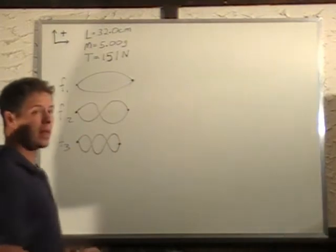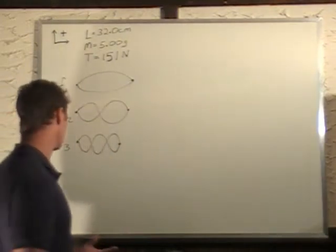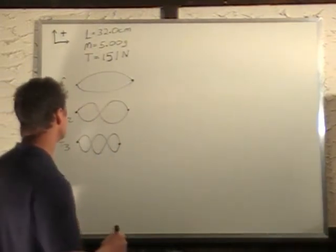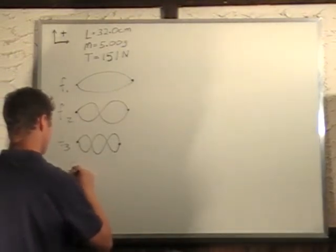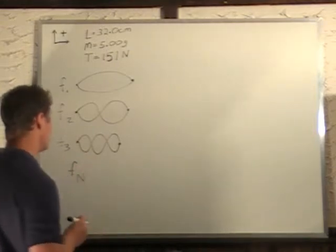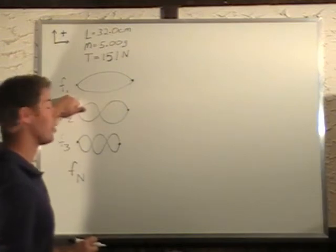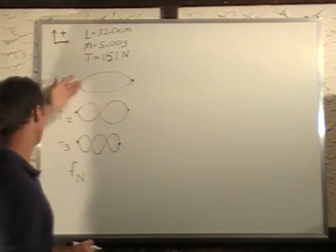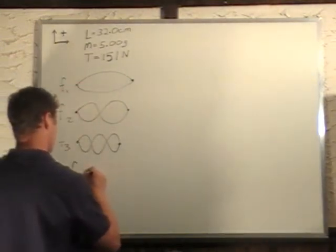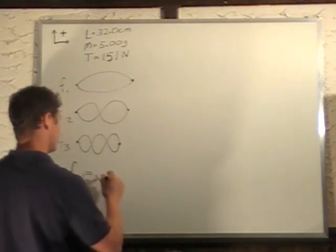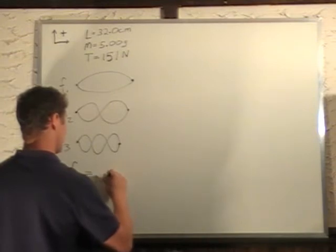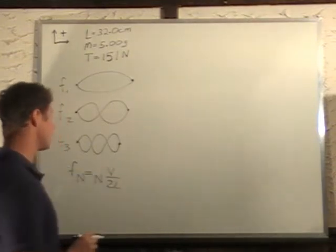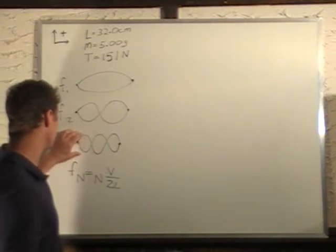So there's our three standing waves. Now, there's a simple formula to figure out the frequency of each of these, given this information. We have Fn, where n is the mode or the harmonic of the system. So frequency of the mode is equal to the mode n times velocity over 2L.